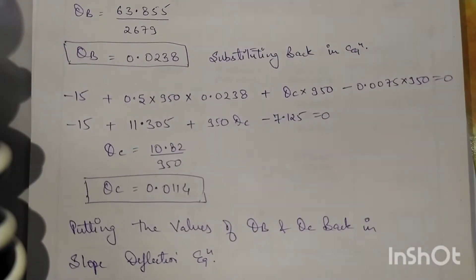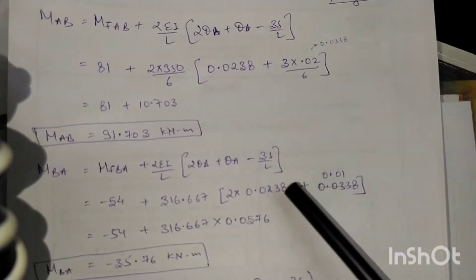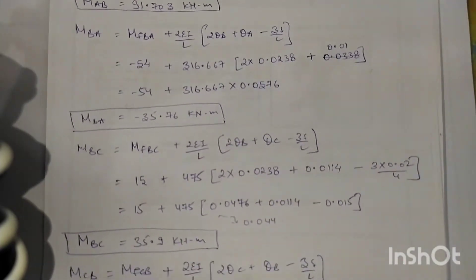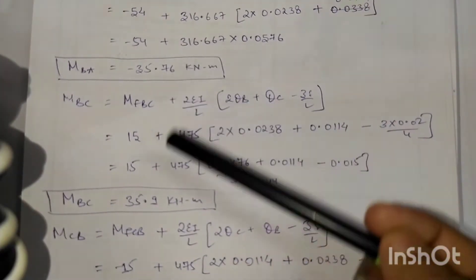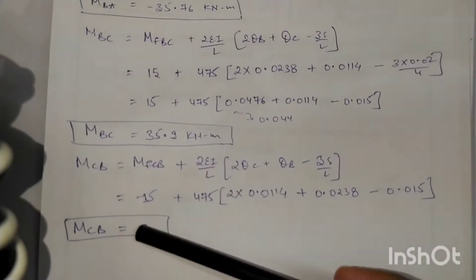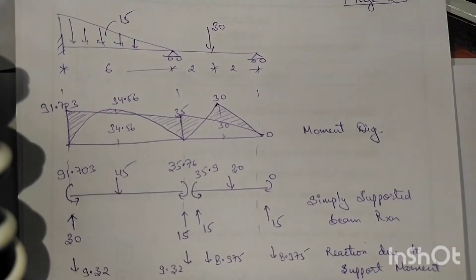After calculations we get theta B value and are re-substituting it, and we are getting theta C value. Finally we are putting the value of theta B and theta C in MAB, MBC, MBA, and we are getting the value. Here MBA and MBC are almost same, and MCB is equal to zero simply supported.